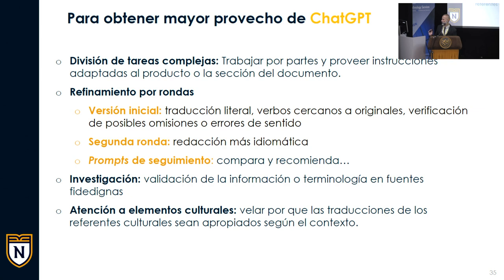Para obtener mayor provecho de ChatGPT en los procesos de traducción: división de tareas complejas. Más que poner todo el contenido de un prontuario en el chat y darle un conjunto de instrucciones, por más precisas que sean, la probabilidad de que arroje resultados distanciados de lo que busco es mayor. Es más fácil para la aplicación si se lo vamos dando poco a poco, y también nos ayuda a nosotros a enfocarnos. Según conocemos las particularidades de cada parte, podemos darles instrucciones pertinentes y lo vamos trabajando por etapas.